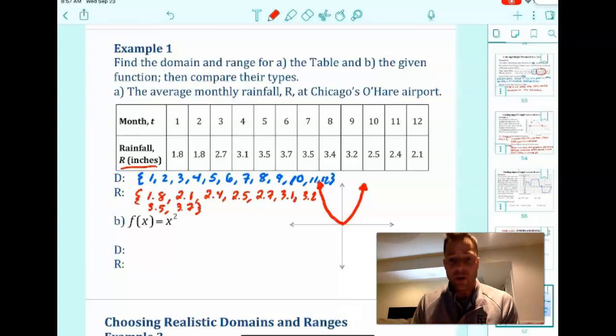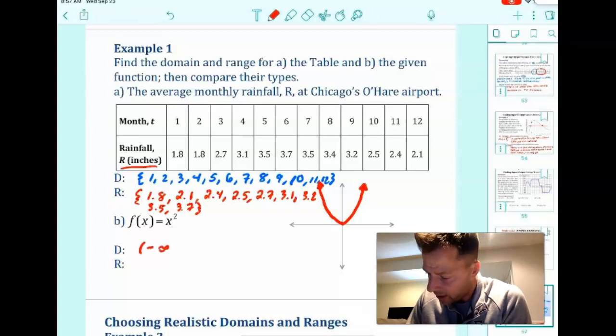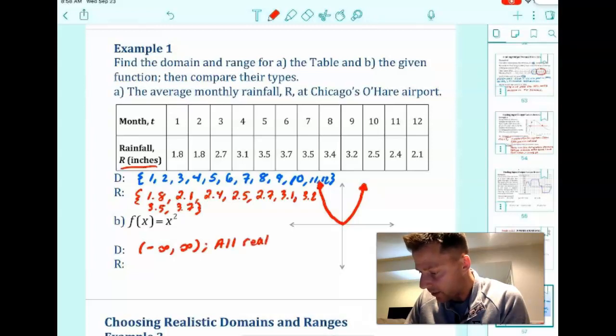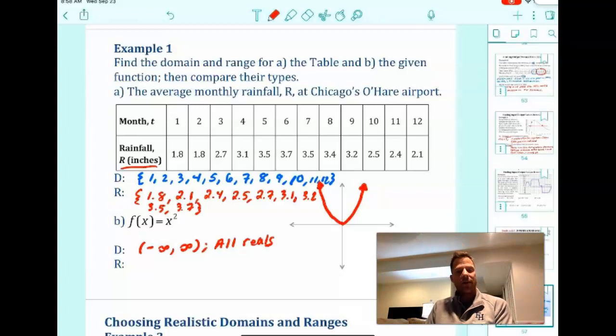The domain of a quadratic function is all real numbers. So we have a couple ways you can do this. You can go from negative infinity to infinity. And you could also just say all real numbers, all reals, right? Either way is acceptable. All real numbers.